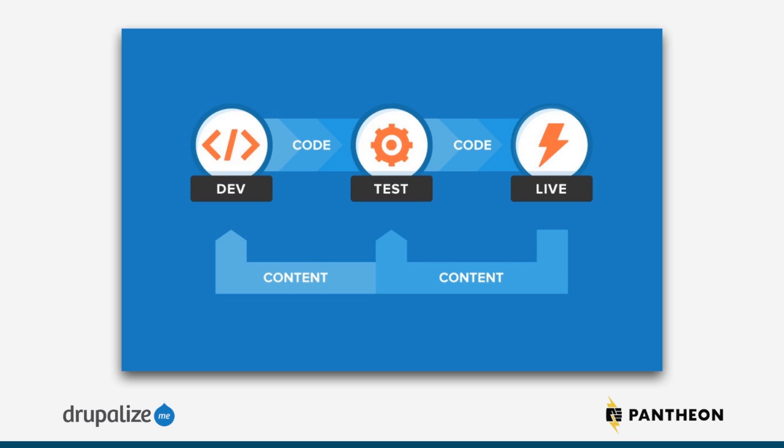So you take your dev, push it up to test, and people are testing it while developers are still working away. Then once you're ready and you've approved what's happening on the test server, you would deploy that out to your live site and start the process all over again. Code always moves up — you're fixing things and moving them through that system.